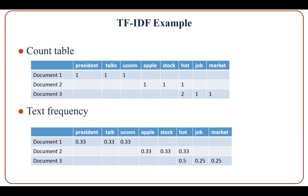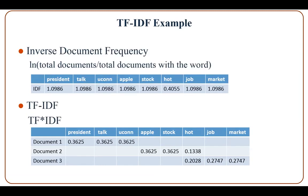the total number of words in Document 3 is 4. Also, we can see that the term frequency of the words 'job' and 'market' is 0.25. We also compute the inverse document frequency, which is the log of the